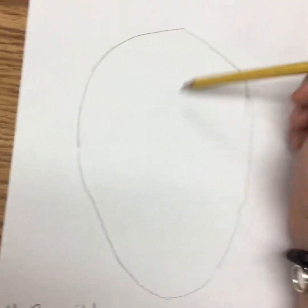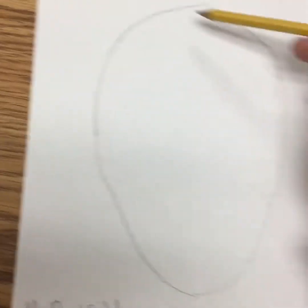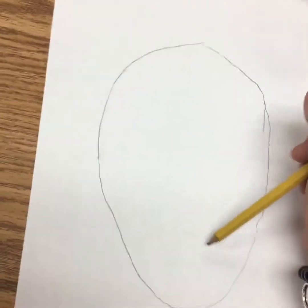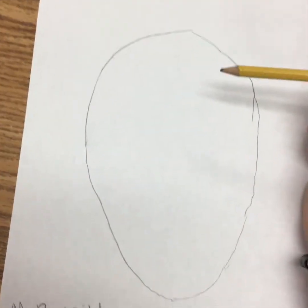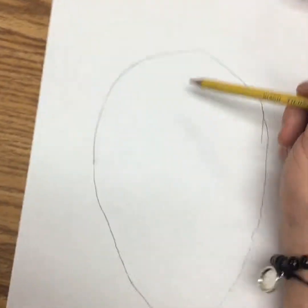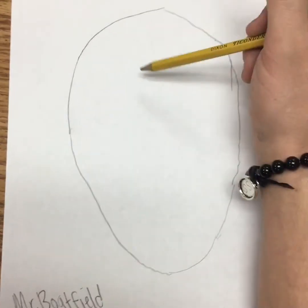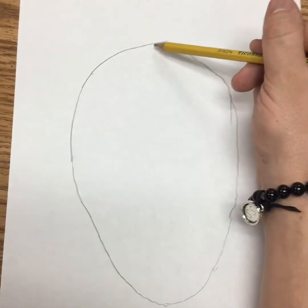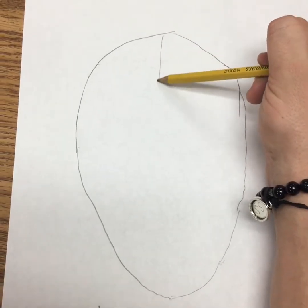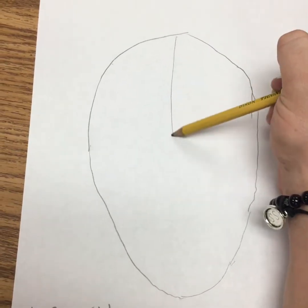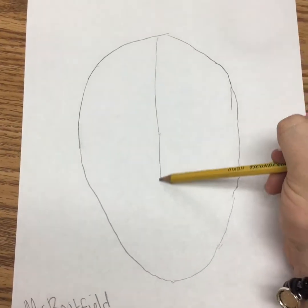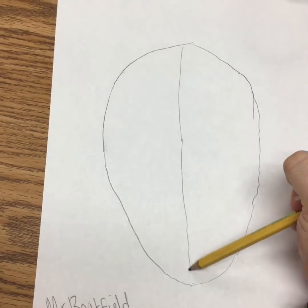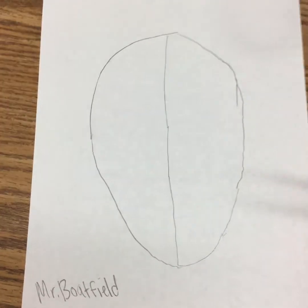Now it's time to start using proportion. This will sound a little bit weird — it's not gonna look like a face at first. What you're going to do is draw a line all the way down, right through the middle. Give me a thumbs up when you're ready.